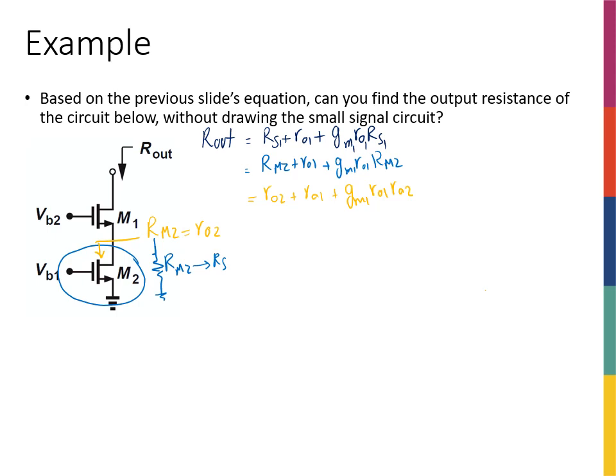We didn't need to draw the small signal model to calculate Rout. From this point forward, we relate whatever circuit we see to circuits we already know. So far we know common source and common source with degeneration; future configurations include common gate and common drain. In this example, M1 was the main transistor in a common source with degeneration, and M2 simply generated a resistance at M1's source equal to R02.